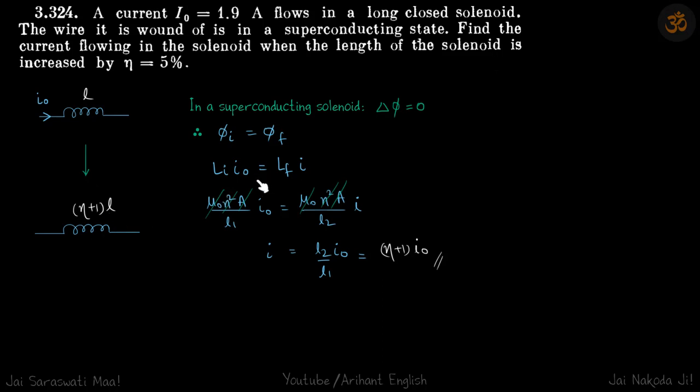Initial inductance is μ₀n²A/L₁, the standard formula for inductance of a solenoid. This equals μ₀n²A/L₂ times I. Everything will cancel except length.